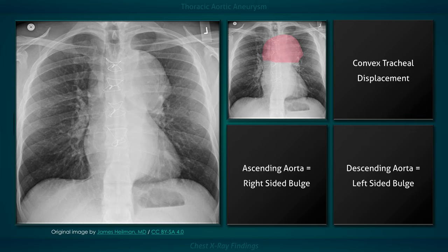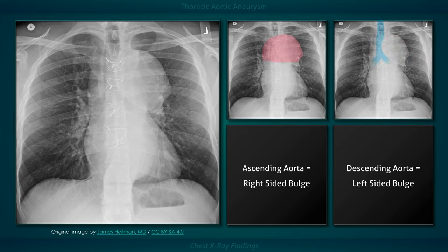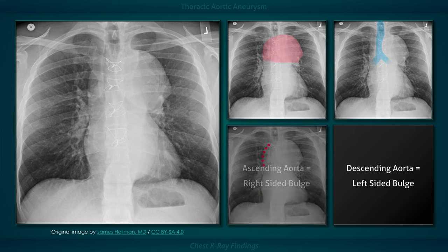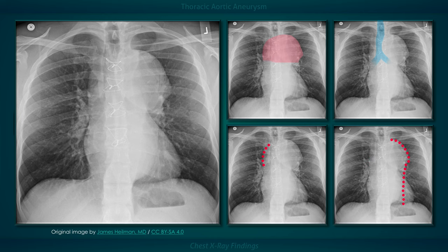The most common chest x-ray finding in a patient with a thoracic aortic aneurysm is mediastinal widening. Calcification of the outer wall can occur but is relatively uncommon. Large aneurysms can cause lateral displacement of the trachea and inferior displacement of the left main bronchus. Aneurysms limited to the ascending aorta typically cause a right-sided bulge, and when large, obscure the upper right border of the heart. Aneurysms limited to the descending aorta typically cause a left-sided bulge.